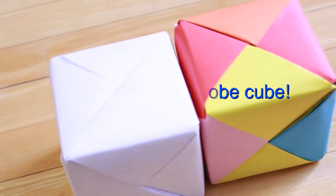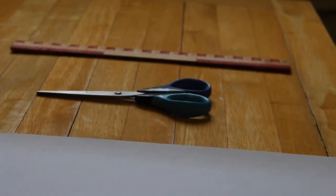How to make a Sonobe cube. You will need 6 pieces of A4 paper, a ruler and scissors.